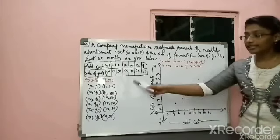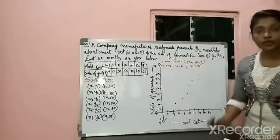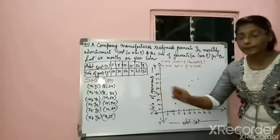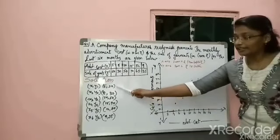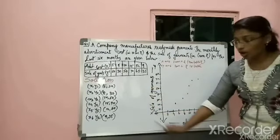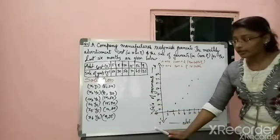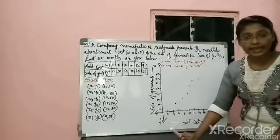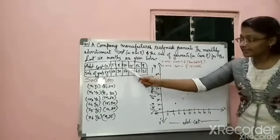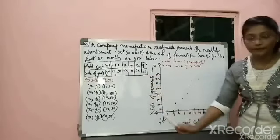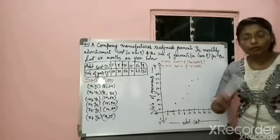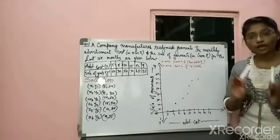Now for the solution, you have to write the coordinate pairs: X1, Y1 would be 5 and 20; X2, Y2 would be 8 and 30; X3, Y3 would be 10 and 50, and so on for all the data points. After writing these, take the graph and plot accordingly.